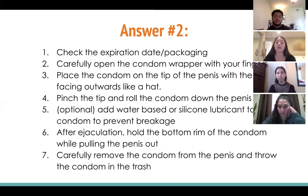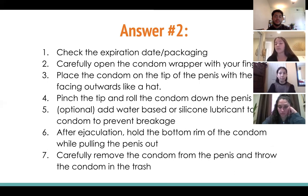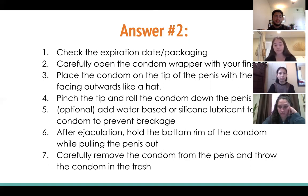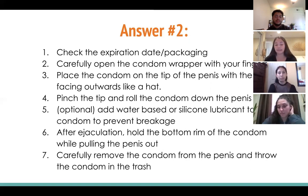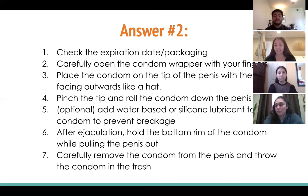Step four: pinch the tip and roll the condom down to the base of the penis. Step five (optional): add water-based or silicone lubricant to prevent breakage and increase comfort — avoid oil-based lubricant as it causes breakage. Step six: after ejaculation, hold the bottom rim while pulling the penis out to avoid spilling semen. Step seven: carefully remove the condom and throw it in the trash, not down the toilet.